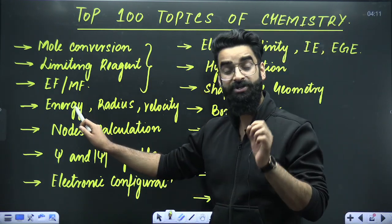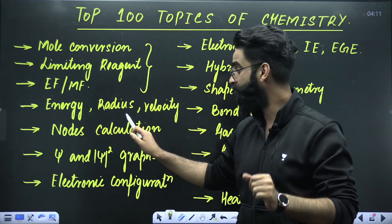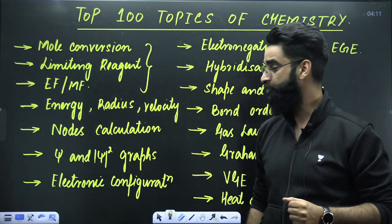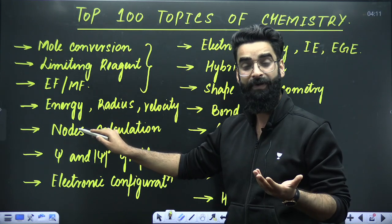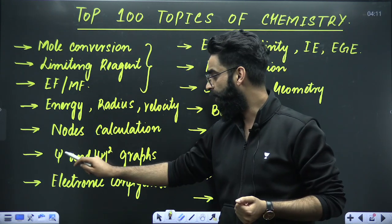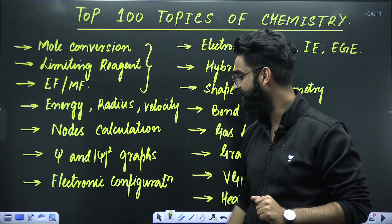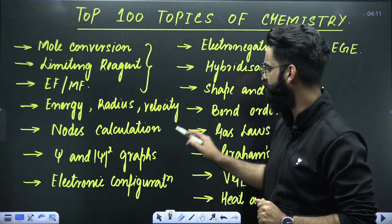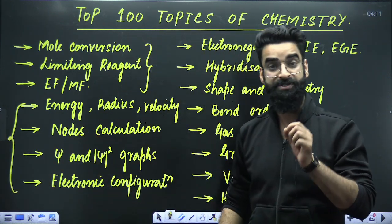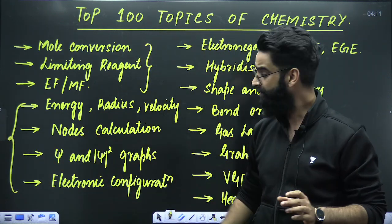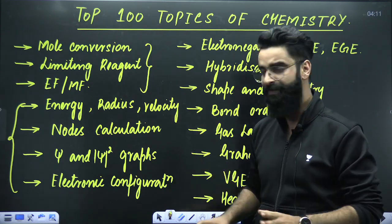From the chapter atomic structure, questions are asked related to energy and radius of Bohr's orbit, velocity of electrons in Bohr's orbit, nodes — how to calculate nodes and the different types of nodes — psi and psi-squared curves, and electronic configuration including exceptions. These are the topics from atomic structure which you should not leave.